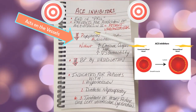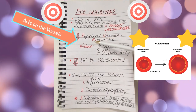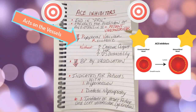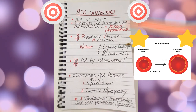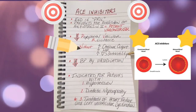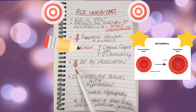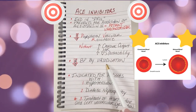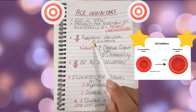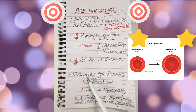So when you give a patient an ACE inhibitor, it is going to cause vasodilation, therefore decreasing the peripheral vascular resistance without increasing the cardiac output, the heart rate, or the heart's contractility. It will decrease the blood pressure because now the vessel has dilated and is no longer narrow. The peripheral vascular resistance has dropped, therefore the blood pressure will drop.